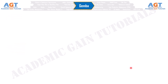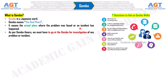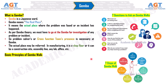Number 15: Gemba. Gemba is a Japanese word meaning 'the real place' — the actual place where a problem was found or an incident has happened. As per Gemba theory, we must go to the Gemba for investigation of any problem or incident, so problem solvers or cross-functional teams' presence is necessary at the Gemba. The actual place may be a shop floor, construction site, assembly line, lab, or office. Basic principles of a Gemba Walk include: have a specific purpose, be familiar with the area, understand the overall process, correctly understand what you are seeing, and know what to ask.